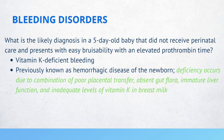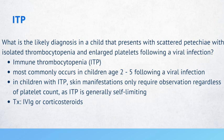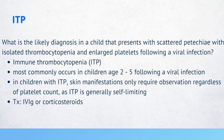What is the likely diagnosis in a child that presents with scattered petechiae, isolated thrombocytopenia, and enlarged platelets following a viral infection? Immune thrombocytopenia (ITP). If a patient had an upper respiratory tract infection and then presents with petechiae and thrombocytopenia as the only abnormality, think ITP. It most commonly occurs in children ages two to five following a viral infection. Skin manifestations only require observation regardless of platelet count, as ITP is generally self-limiting. Treatment includes IVIG or corticosteroids.